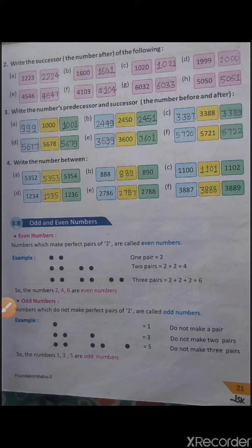We can find it two ways. First, when we add 1 to 5352 we can get it. And when we subtract 1 from 5354, we can also get the number. In this question, the successor and predecessor are already given and we have to find the number whose successor and predecessor are given here.